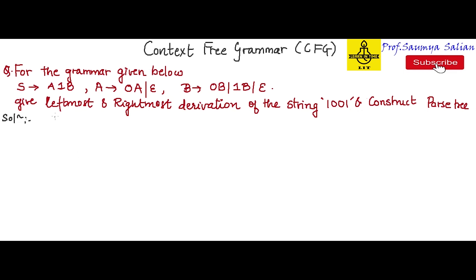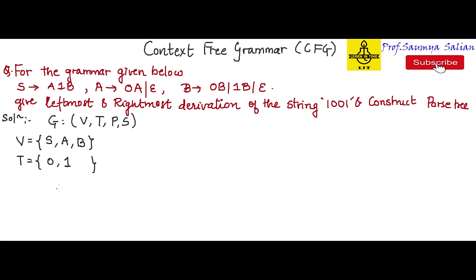Let's first understand the grammar. We know that grammar is defined by V, T, P, and S. From the production rules, I can identify the variable set: S, A, and B as non-terminal symbols. The terminal symbols T are 0 and 1. The production rules are: S derives A1B, A derives 0A or epsilon, and likewise the production rules of B. S is the start symbol.